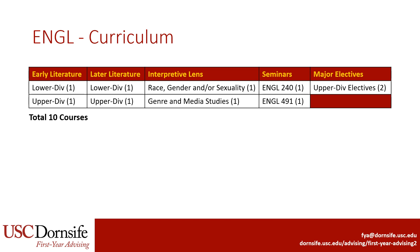Like the Creative Writing major, Literature majors will take two seminar courses, one in sophomore year and another in senior year. And finally, you will be able to pick two upper division major elective courses.